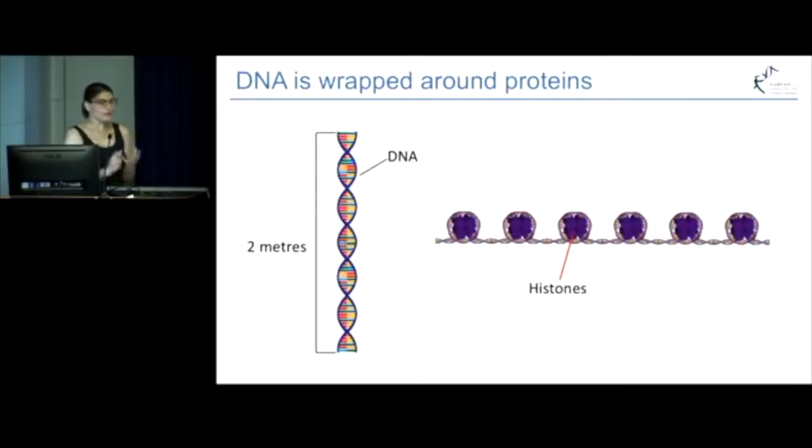So in order to achieve this, the DNA has to be very efficiently packaged. And as Sue pointed out, that first step is to wrap it around these proteins called histones to form this bead-on-a-string structure. This is how DNA always exists in the cell. But just for simplicity in my future slides, I'll be representing this structure with a straight line.